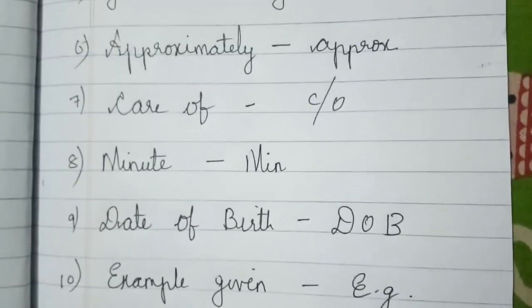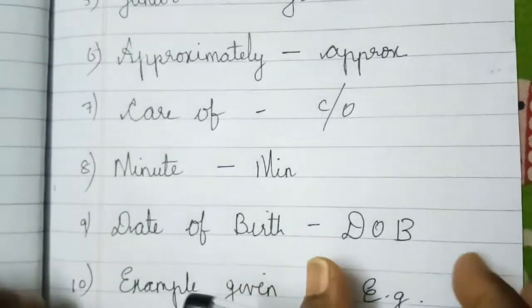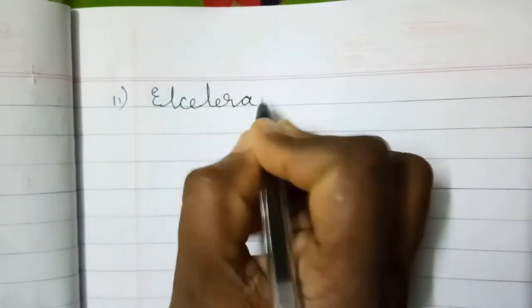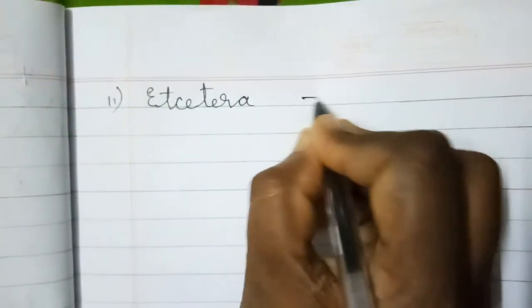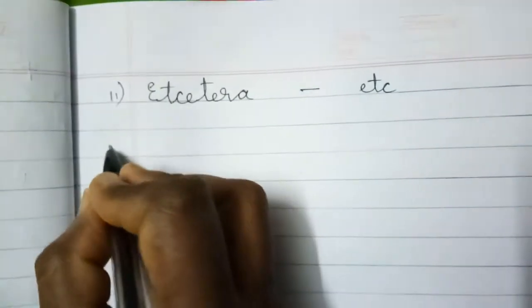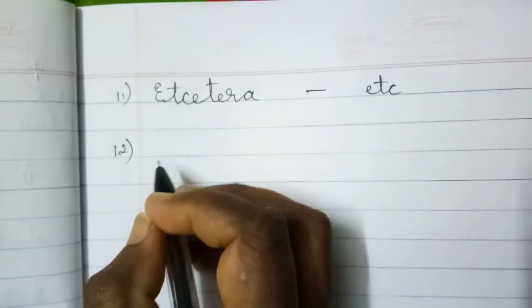Now turn your page. Children, again turn your page. Again leave the left side empty. And write on the right side. Number eleven, E-T-C-E-T-E-R-A. What word is this? Etc. You write E-T-C, etc.